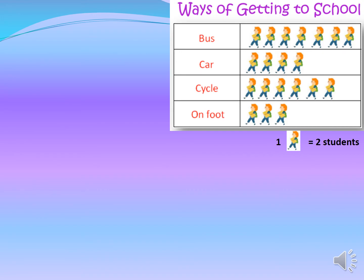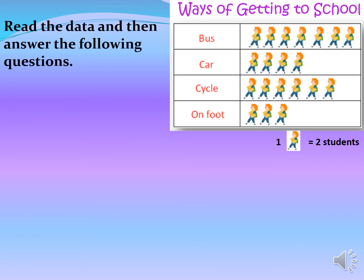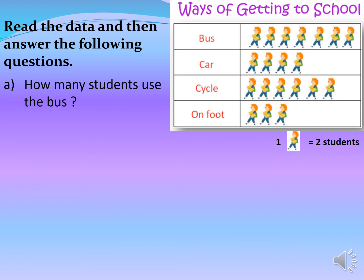Next pictograph gives us information about the ways of getting to school: bus, car, cycle, on foot. One picture of a student represents two students. How many students use the bus? Counting the pictures: one through seven — there are seven pictures. Since one student picture equals two students, seven times two equals fourteen. Hence, fourteen students use the bus. How many students use the car? There are four pictures, so four times two equals eight students.